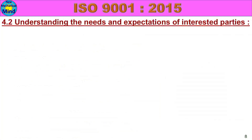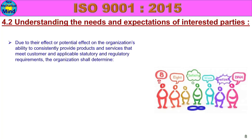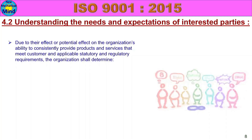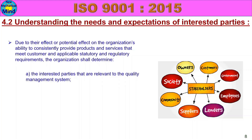Next, 4.2: Understanding the needs and expectations of interested parties. Due to their effect or potential effect on the organization's ability to consistently provide products and services that meet customer and applicable statutory and regulatory requirements, the organization shall determine the interested parties that are relevant to the quality management system. The quality management system will affect the interested parties.